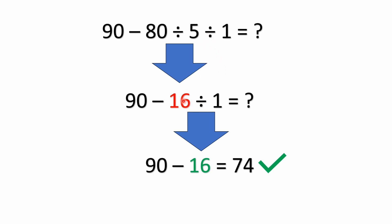Then we do have another division, 16 divided by 1. That's very simple, it's just 16. So we've got 90 minus 16 equals 74. So the final answer, the correct answer, the only correct answer is 74.